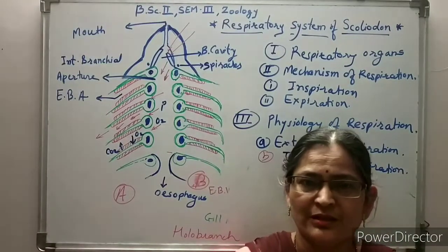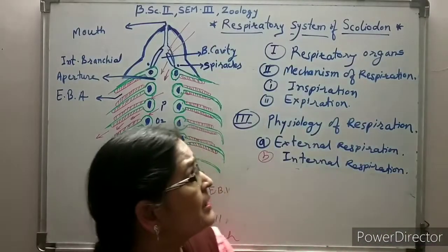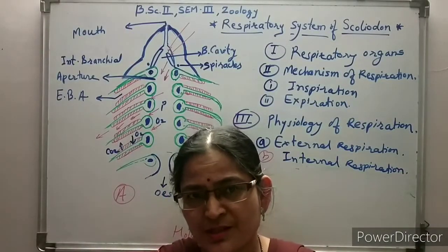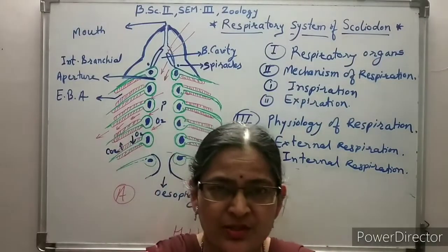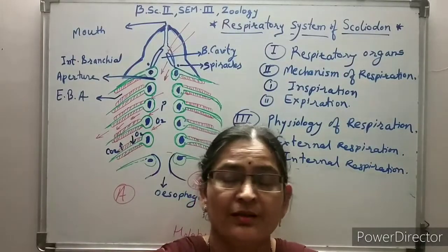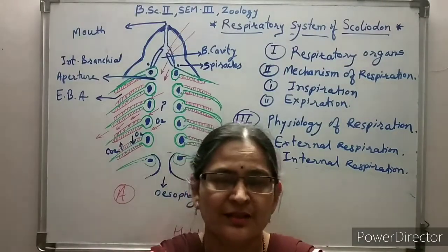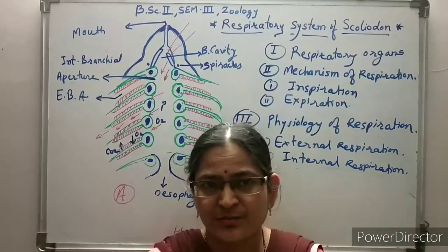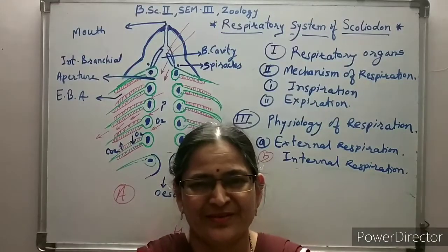So students, in this lecture we have seen the respiratory system of scoliodon, which includes three major parts: the respiratory organs, which contain five pairs of gill pouches with gills; the mechanism of respiration, which includes the inspiration and expiration processes; and the physiology of respiration, which includes external respiration as well as internal respiration. We will stop here. Thank you very much.